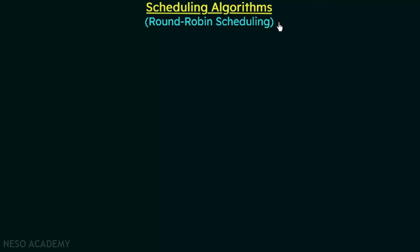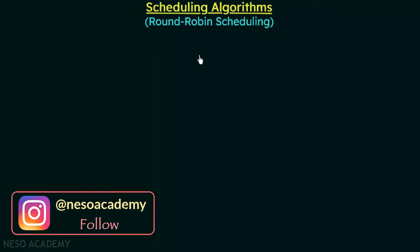So far we have discussed about three scheduling algorithms, namely the first come first serve scheduling, the shortest job first, and the priority scheduling. In this lecture we are going to discuss the next scheduling algorithm, which is also a very important one — the round robin scheduling. We will see what round robin scheduling is and how it works.